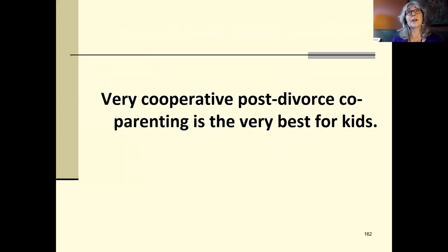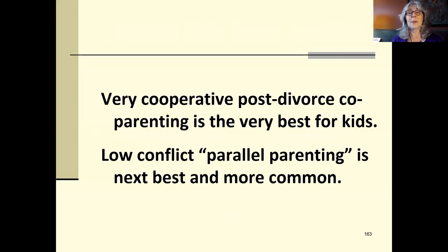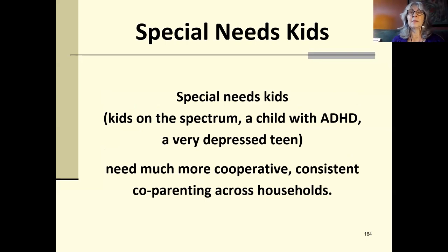Very cooperative post-divorce co-parenting is the very best for kids. For most kids, low conflict parallel parenting is the next and it's best and it's the most common. Except we have an exception here for special needs kids. Kids who are on the spectrum, autism spectrum, kids with ADHD, a very depressed or suicidal teen needs much more cooperative, consistent co-parenting across households. And often, by the way, these co-parents are in quite a lot of conflict. So that tends to be much, much harder on these kids than on other kids. The two houses don't have to be exactly the same. But the best for these kids, that there is a good amount of consistency between the two houses, especially for kids on the spectrum and kids with ADHD. And if there is a very depressed teen, very important that in both houses, the adults are tuned in, emotionally tuned in. Depressed teens don't always let you know what's going on. They're highly tuned into what's happening with the kids.